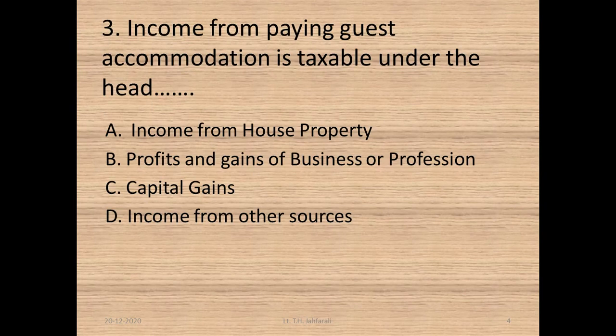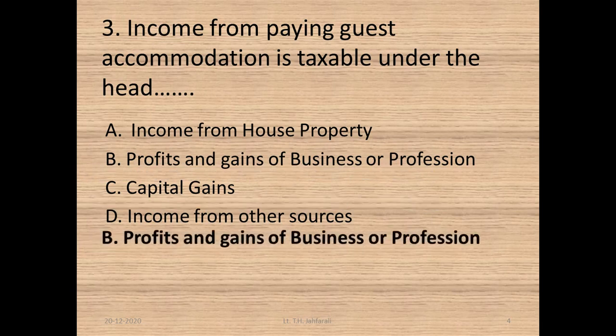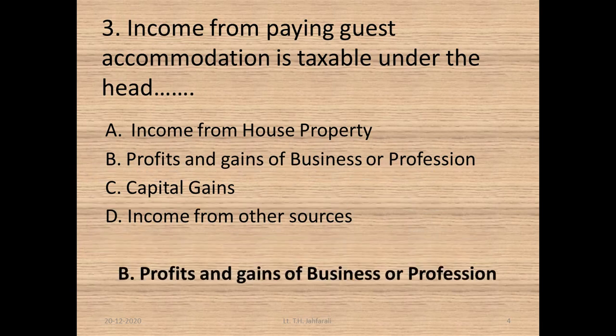Question 3 options: B. Profits and gains of business or profession, C. Capital gains, D. Income from other sources. Option B: Profits and gains of business or profession.